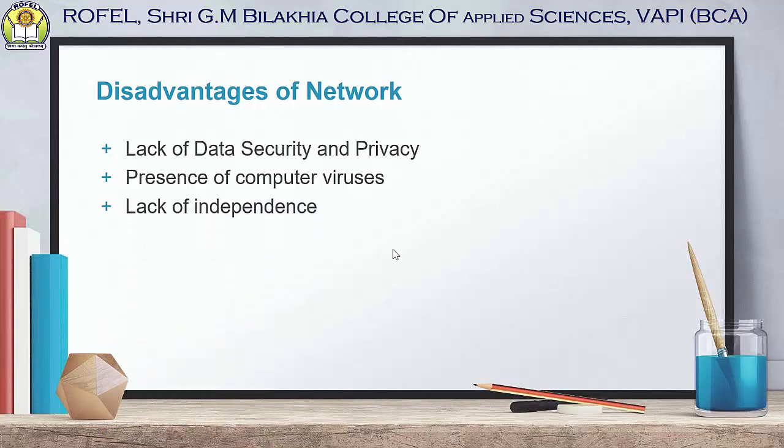The third disadvantage is lack of independence. Since most networks have a centralized server with dependent clients, the client users lack freedom. Centralized decision making can sometimes hinder how a client user wants to use their own computer. The client always has to depend on the server. For example, if a file is stored on the server, the server may grant the client only view access — they cannot edit or delete it. The level of authority depends entirely on what the server grants.